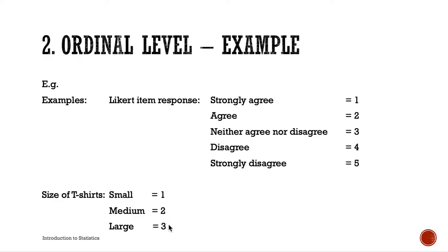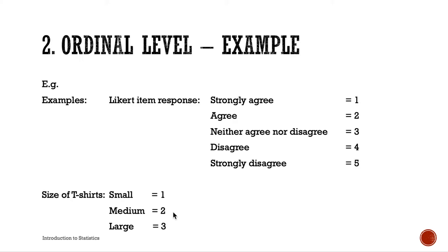In the ordinal scale, we know medium is bigger than small and large is bigger than medium. However, although numbers are assigned in consecutive order, we cannot assume the difference between two consecutive numbers is equal anywhere on the scale. For example, in the Likert scale, we don't know how much better 'strongly agree' is compared to 'agree,' and that difference is not necessarily the same as between 'disagree' and 'strongly disagree.'